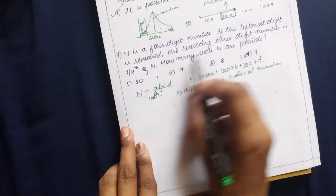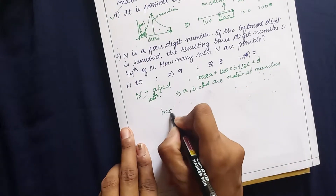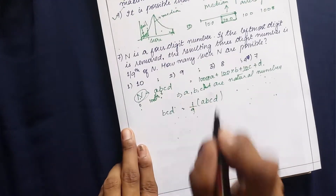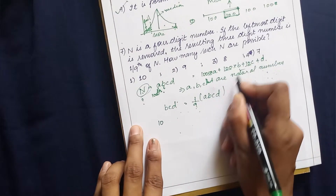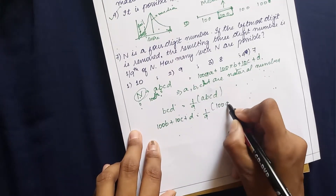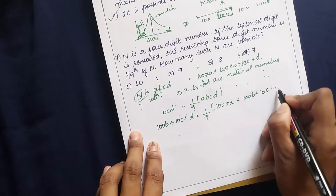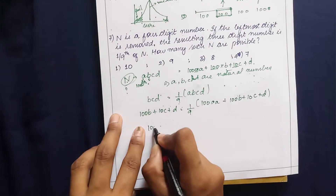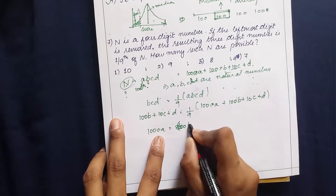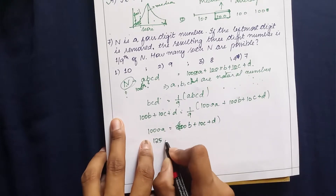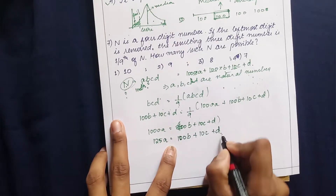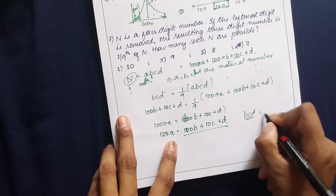When the leftmost digit A is removed, BCD equals one ninth of ABCD. Expanding: 100B + 10C + D = (1/9)(1000A + 100B + 10C + D). Equating and cancelling common terms, we get 1000A = 8(100B + 10C + D), so BCD is expressed in terms of A.